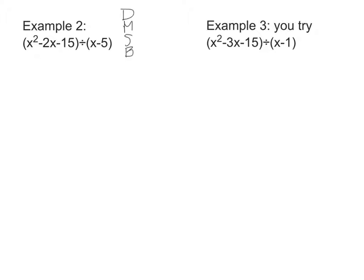My next example is using polynomial long division. If you remember dividing numbers, your first step was to divide. The second thing you did was multiply the number by what you were dividing by to put that underneath. Then we subtracted, then we brought down the next one, and then we repeated.